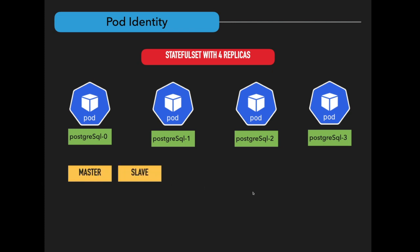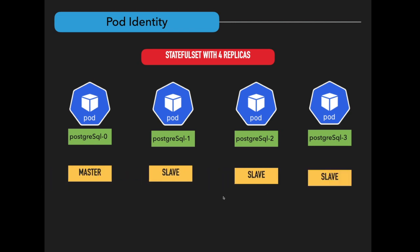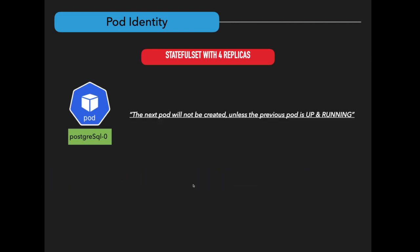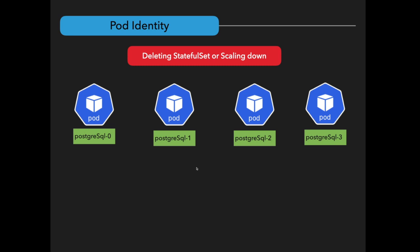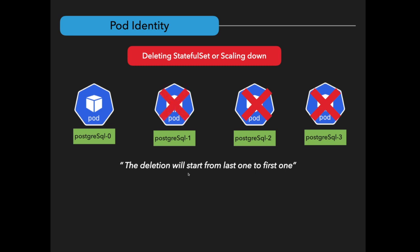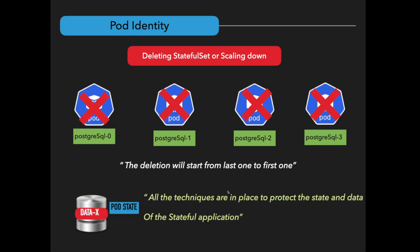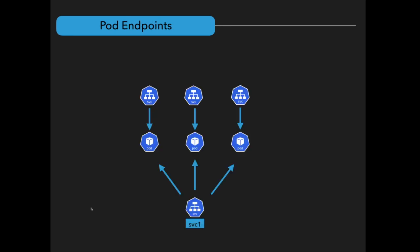For example, if you create a StatefulSet for a PostgreSQL database with four replicas, the pod names will be: postgresql-0, postgresql-1, postgresql-2, postgresql-3. The first one is the master and the rest are slaves. Importantly, if the creation of the first pod is not finished or is not in a running state, the next pod will not be created. If the first pod fails or is in pending status, the next pod will not be created. When deleting a StatefulSet or scaling down from 4 to 0, deletion happens in reverse order — postgresql-3 first, then 2, then 1, then 0.